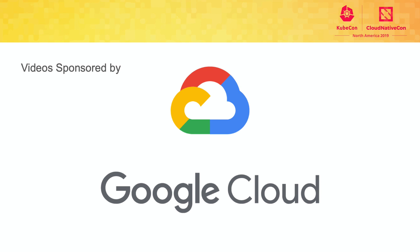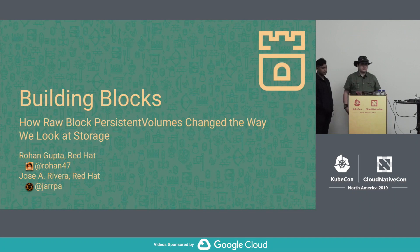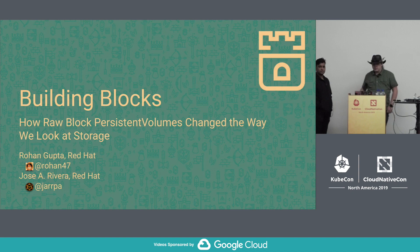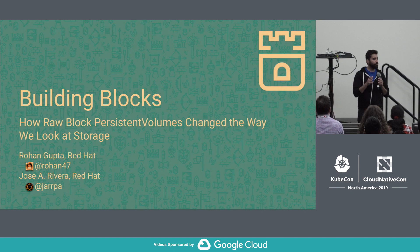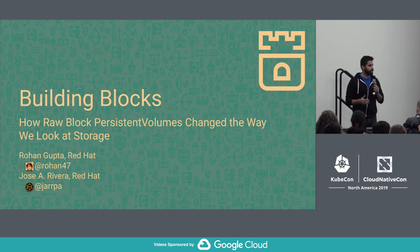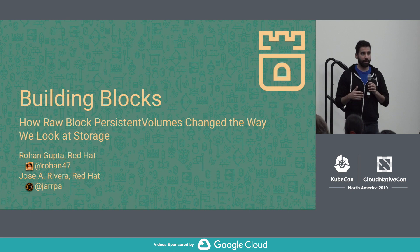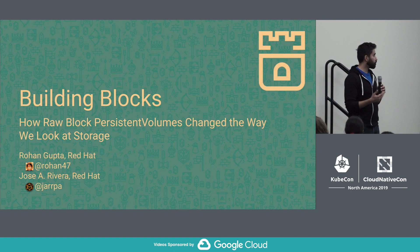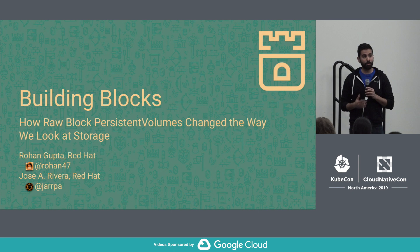Welcome everyone. My name is Saad Ali. I'm very lucky to introduce Rohan and Jose from Red Hat. They're going to be talking about raw block volumes today. To put this into context, if you're familiar with the Kubernetes volume subsystem, the system allows you to access volumes as files with a file system applied to it. You'll have a directory mounted into your container, and when you read and write files to that directory, it'll be persisted out. There are some applications that don't like to interact with volumes through a file system interface and want raw block access. This new feature, currently in beta — raw block volumes — is what they'll be talking about today. Please give them a warm welcome.